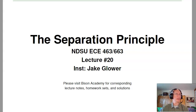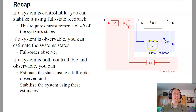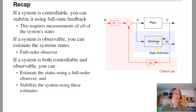Welcome to lecture number 20 for ECE 463 Modern Control: The Separation Principle. As a recap, if a system is controllable, you can stabilize it using full state feedback, which requires measurements of all the system states. If the system is observable, you can estimate those states using only the input, the output, and knowledge of the system's dynamics. If the system is both controllable and observable, you can estimate the states using the observer and stabilize the system using these estimates.